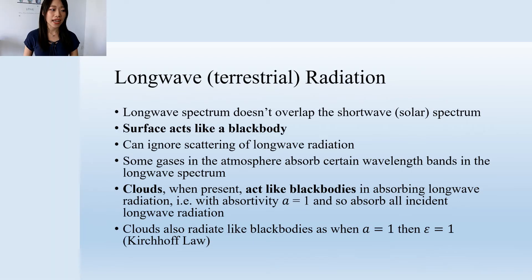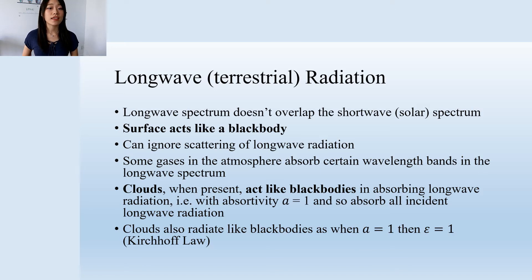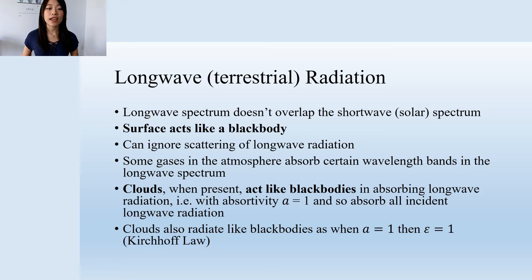As we just saw, the longwave spectrum does not overlap the shortwave spectrum. Note that the surface of the Earth acts like a blackbody — it can absorb most of the incoming solar radiation. At the same time, it emits longwave radiation. The scattering of longwave radiation is negligible, so we can ignore it. Some gases in the atmosphere can absorb certain wavelengths in the longwave spectrum, and we'll discuss that in the next slide.